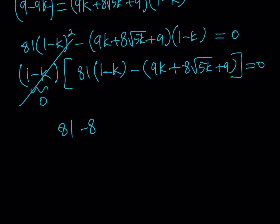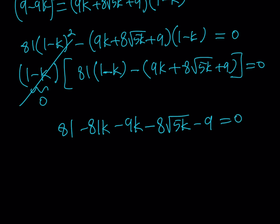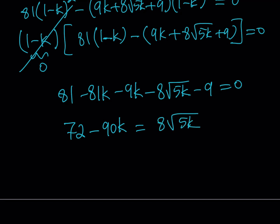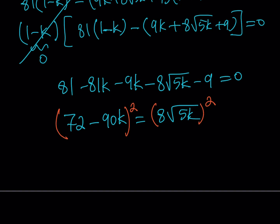Expanding the remaining equation: 81 − 81k − 9k − 8√(5k) − 9 = 0, which simplifies to 72 − 90k = 8√(5k). Isolating the radical and squaring both sides — but first factoring out 18 from the left side to simplify — gives 18²(4 − 5k)² = 64·5k.